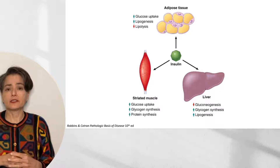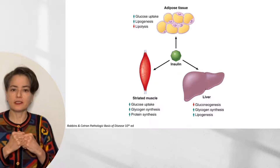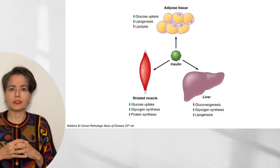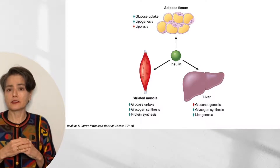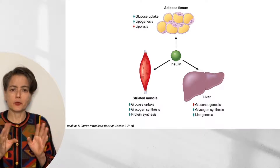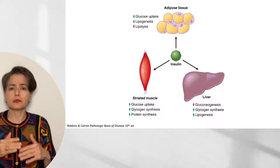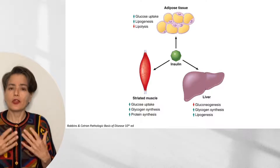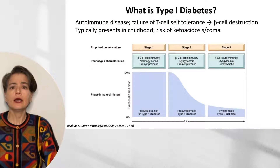Insulin says something similar to striated muscle: go ahead and take up that glucose, make some glycogen for a rainy day, make some proteins — we have abundant resources. And to the liver, insulin says: you don't need to make sugar, we have sugar. Go ahead and make some glycogen, make some lipids. Let's go ahead and store what we've got. That's what insulin does.